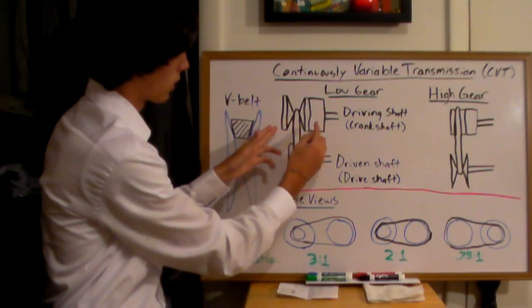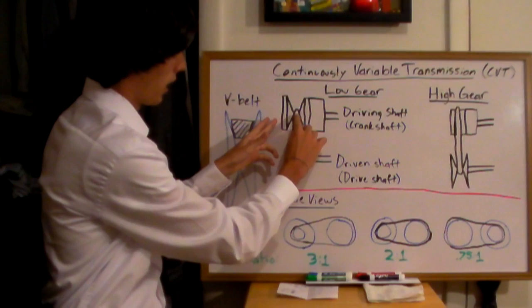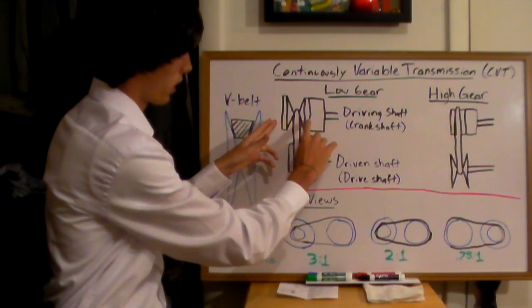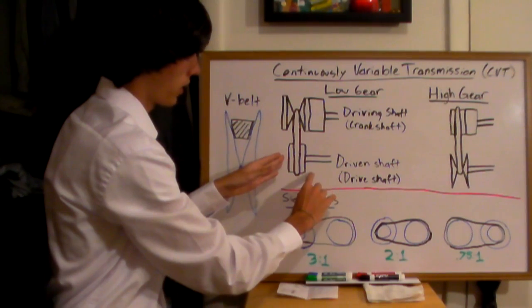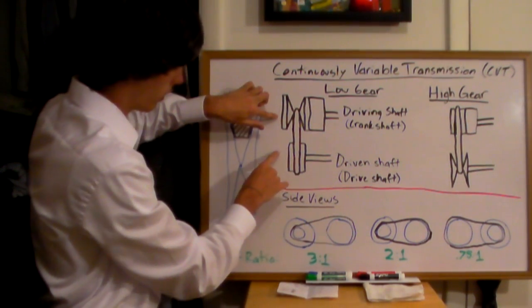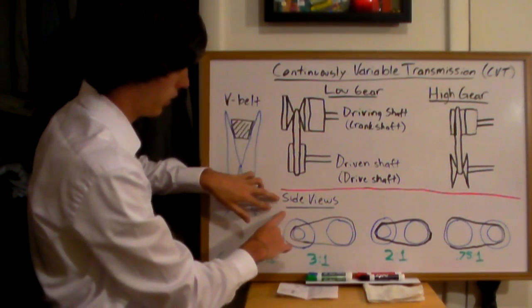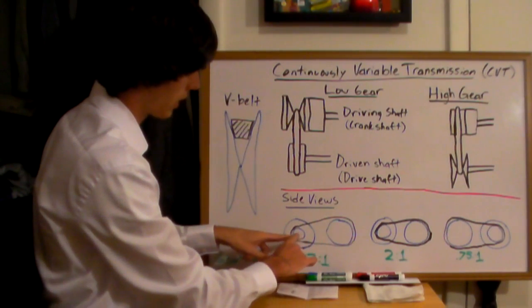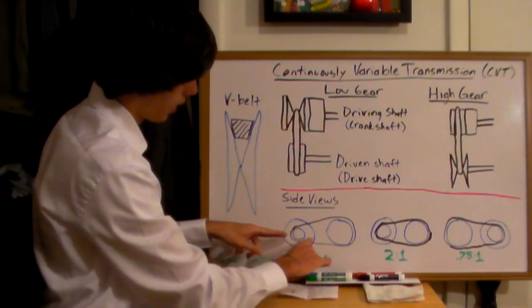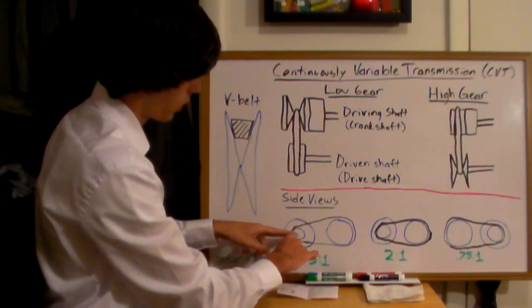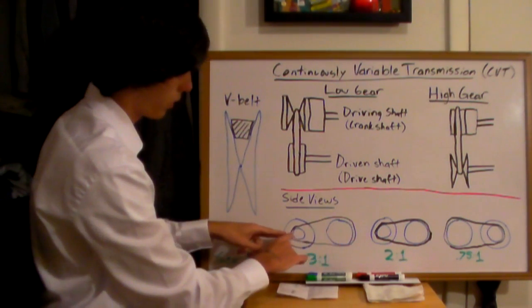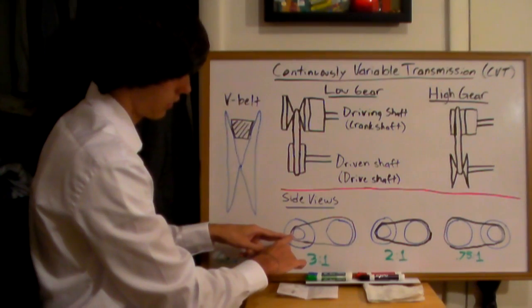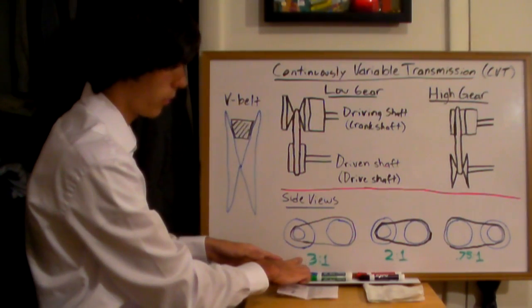This is what it will look like at the lowest gear. Here's your crankshaft, and it will be connected to your drive shaft. If you look at this setup from a side view, this is what the gearing will look like, and you'll have a belt going around. For every rotation of the drive shaft, you'll have three rotations of the crankshaft. So it's like a gear ratio of three to one.